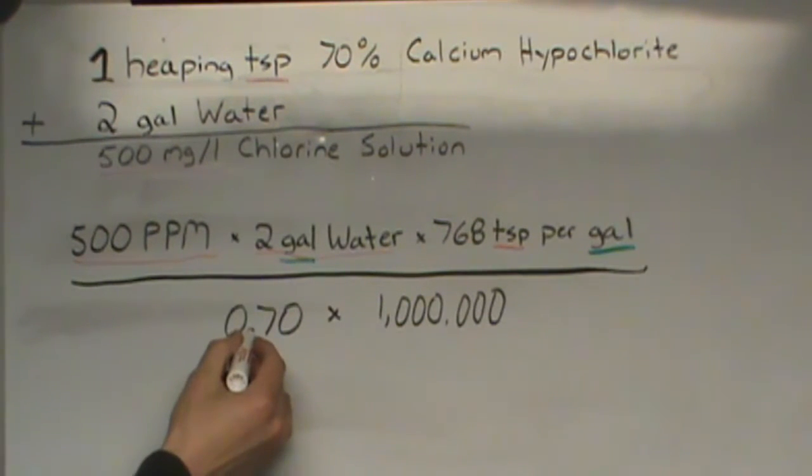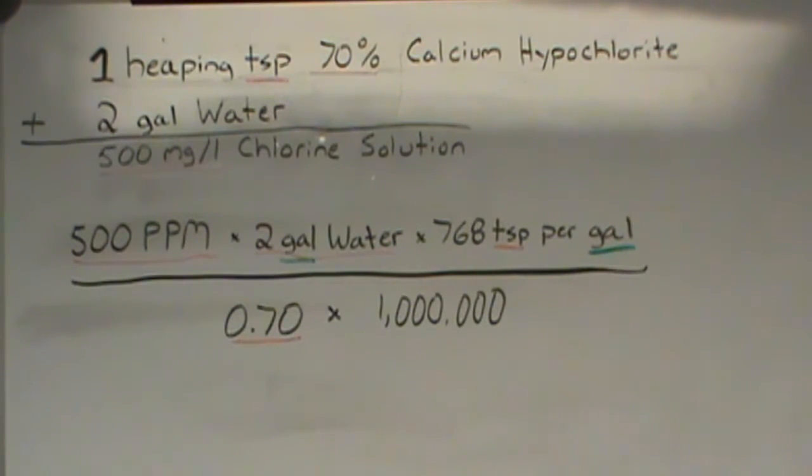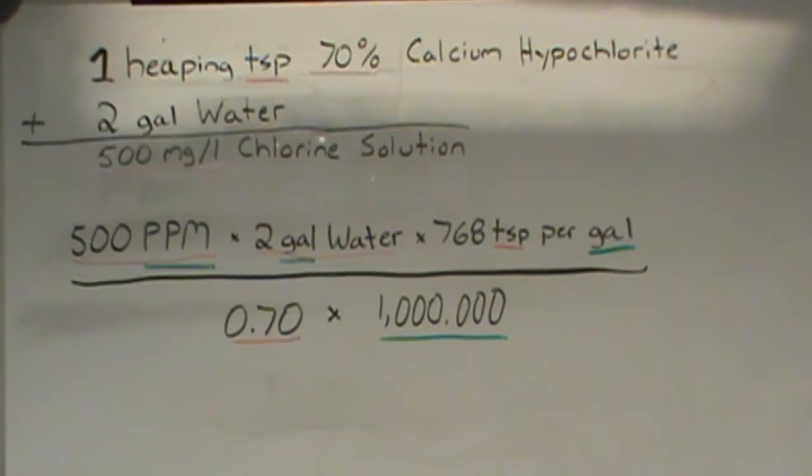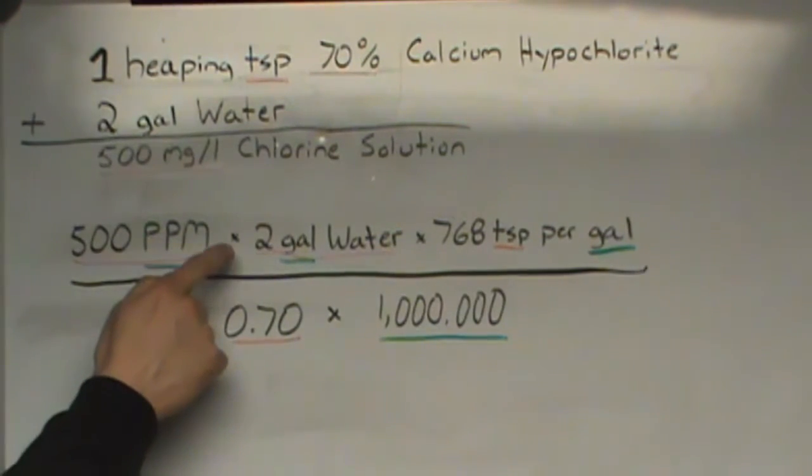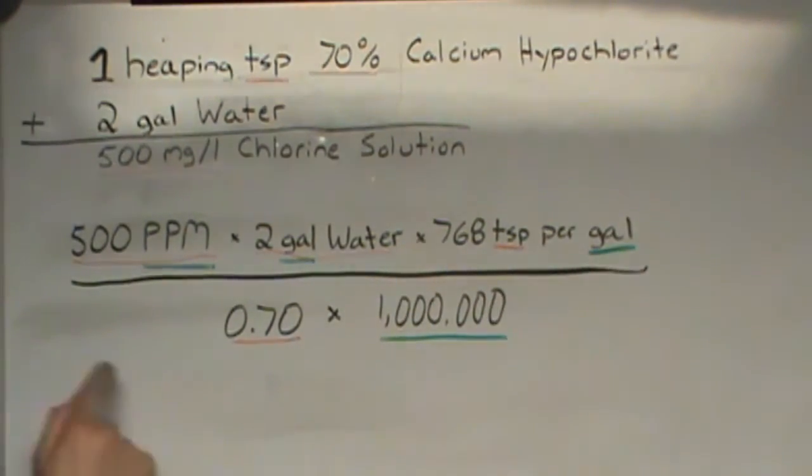Right here we have 0.70 percent. That is the decimal format of 70 percent. That is the amount of calcium hypochlorite that we have available to us. And now we are multiplying that 70 percent in decimal format, 0.70, against 1 million because we are dealing with parts per million. So to summarize this, 500 parts per million times two gallons of water times 768 teaspoons per gallon and we are dividing all of that by 0.70 multiplied by 1 million. So let's calculate that result.